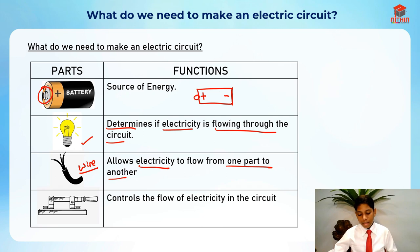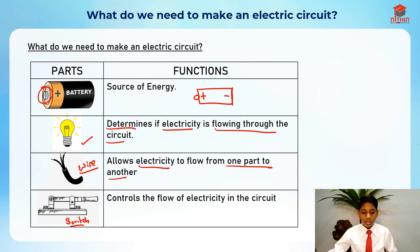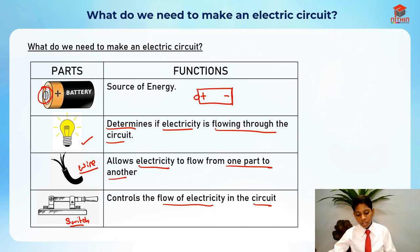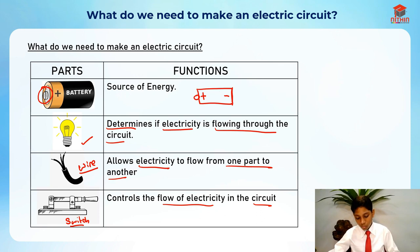The wire allows electricity to flow from one part to another part in the circuit. Next we have the switch. The switch basically controls the flow of electricity in the circuit. If we open the switch, electricity can't flow through the circuit. If we close the switch, electricity will flow through the circuit.